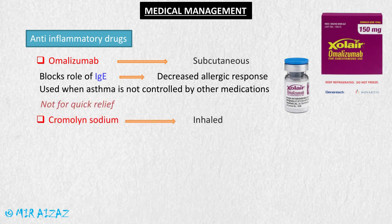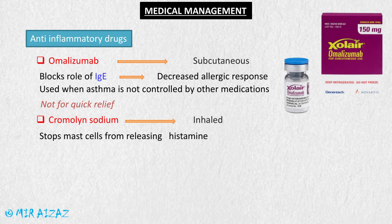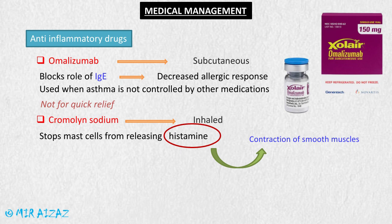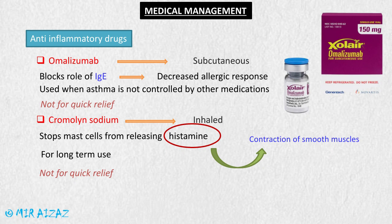The next is cromolyn sodium, taken in inhaled form. It stops the release of histamine from the mast cells. Histamine increases the contraction of smooth muscles, so blocking its release relaxes the smooth muscles. Cromolyn sodium is used for long-term use and not for quick relief of asthma symptoms.